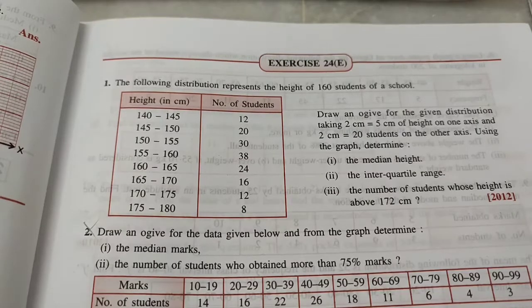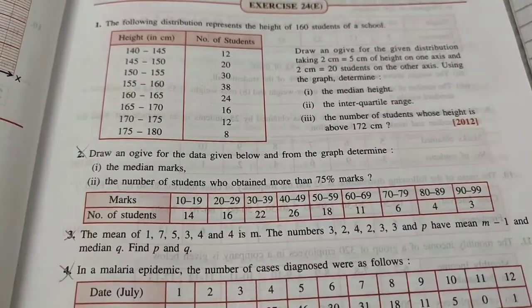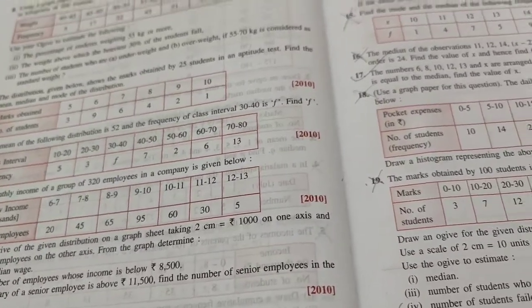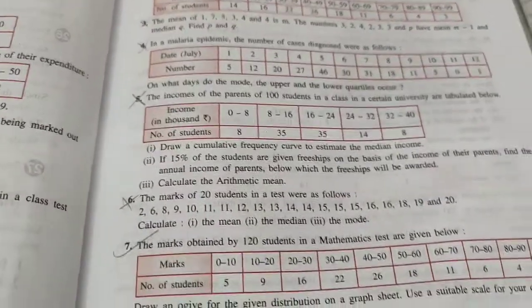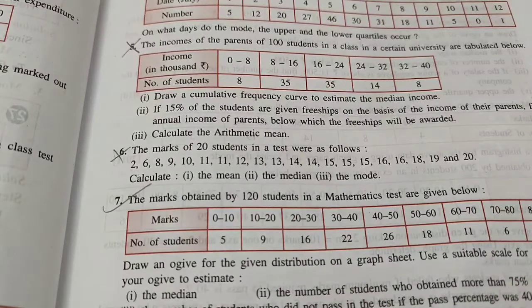Hi students, this is AJ sir. Let's study math, 10th standard ICSE, exercise 24E - measures of central tendency applications. We'll cover sums 2, 3, 4, 5, 6, 9, 12, 14, 15, 16, 18, 19, 20, 21, 22. Let's start with the seventh sum. The cancelled sums are of the same type as 24A, B, C, D.